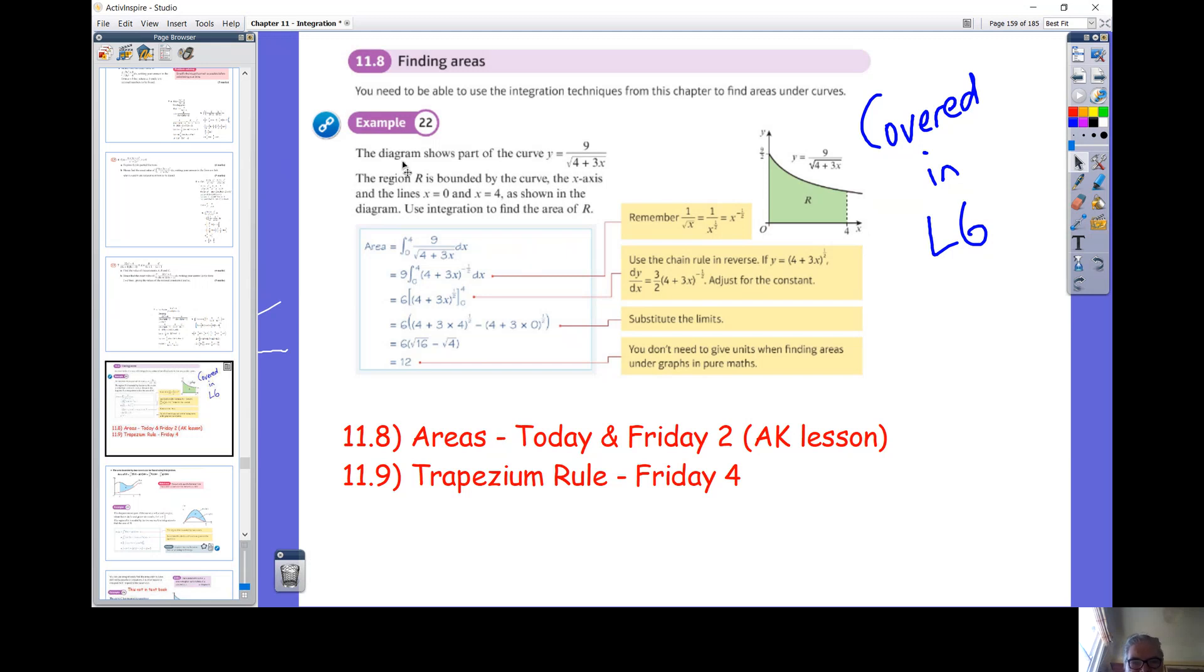So as I'm sure you can remember, just looking at example 22, just finding the area under the graph between 4 and 0, you just literally do the definite integral between 4 and 0. So you integrate, substituting the 4, substituting the 0, take one from the other. So example 22 is really reminding you of what you did at lower 6th.